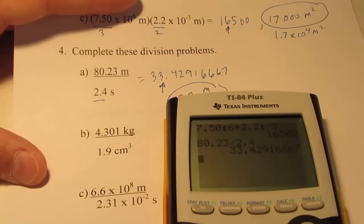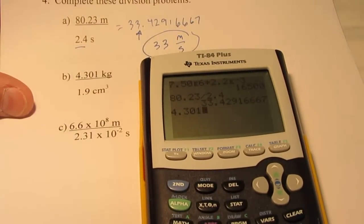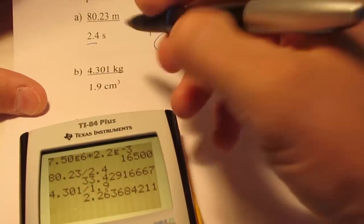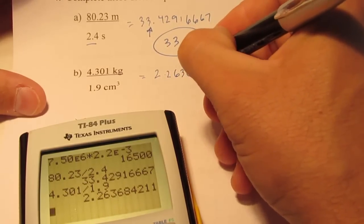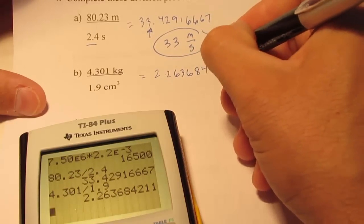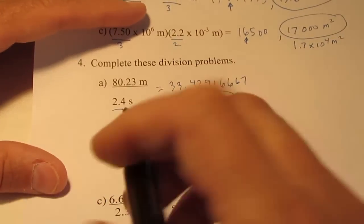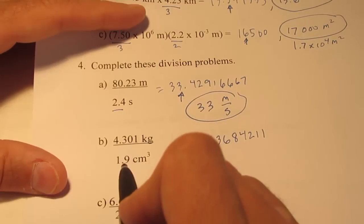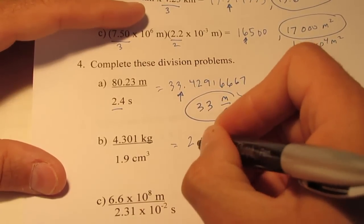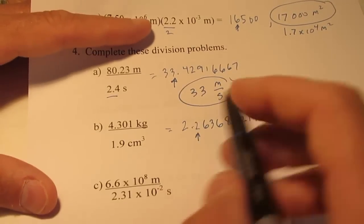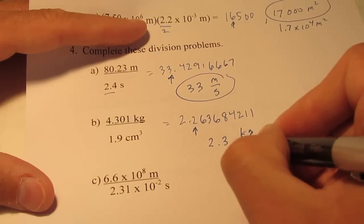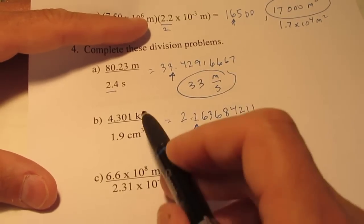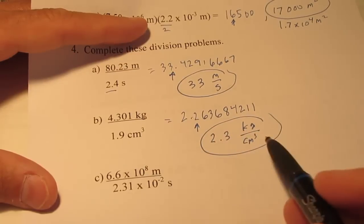Letter B. 4.301 divided by 1.9. My calculated answer is 2.263684211. I have four significant figures on top. Two on the bottom. My answer can have two sig figs. So, I have to round off there. That becomes 2.3 kilograms per cubic centimeter. Kilograms per cubic centimeter is my unit.